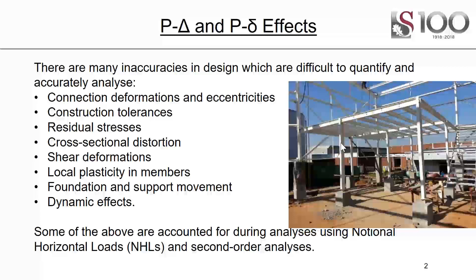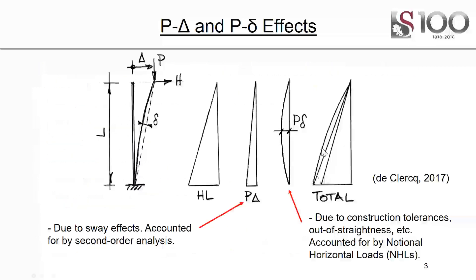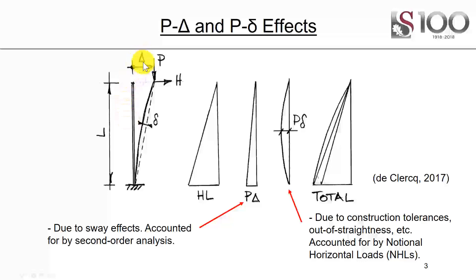We're going to learn to account for some of these now using notional horizontal loads and second-order analyses. Here we have a very simple column and there are going to be two types of P-delta effects: P-big-delta and P-small-delta.